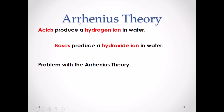First, reviewing the Arrhenius Theory of Acids and Bases. This theory states that acids produce a hydrogen ion in water. In this chemical reaction, our acid HCl ionizes and breaks apart into its ions when placed in water, forming the products H+ and Cl-.